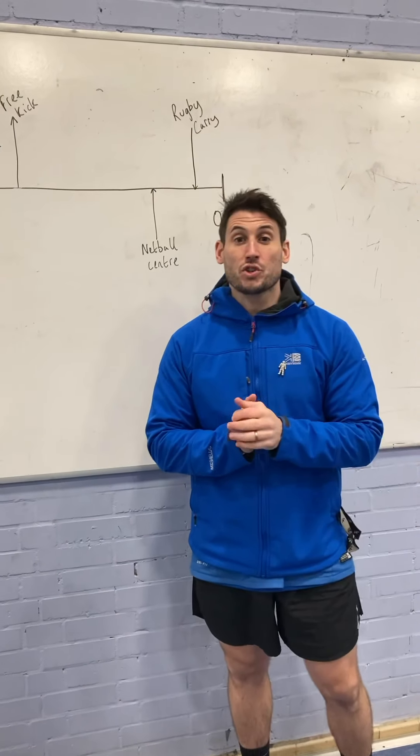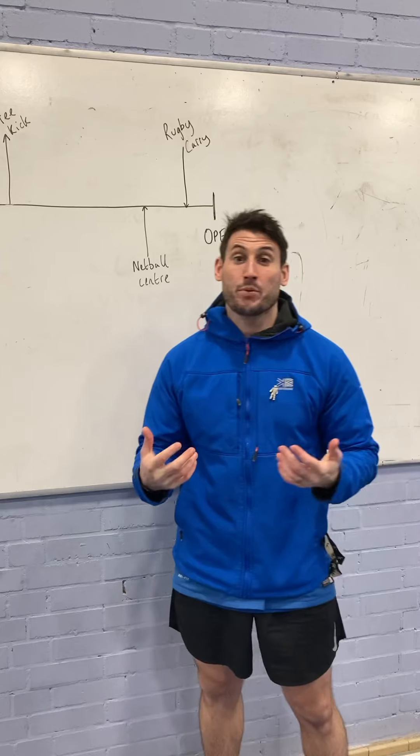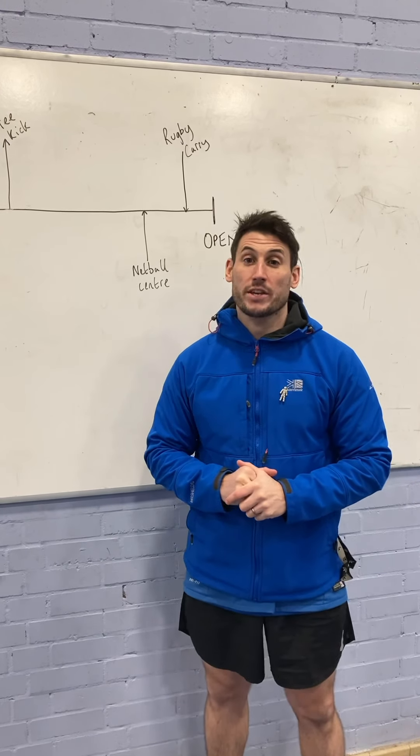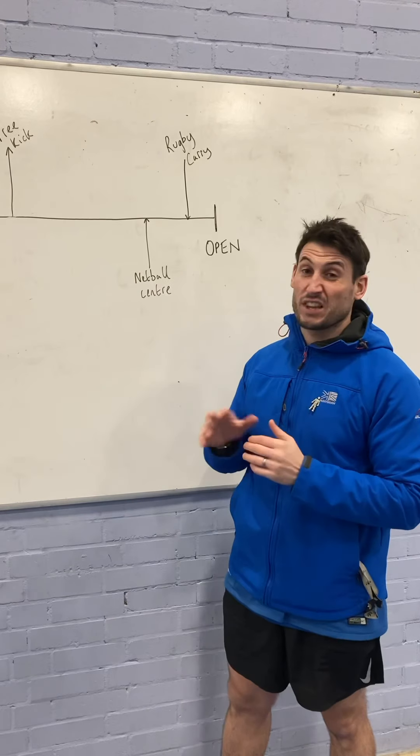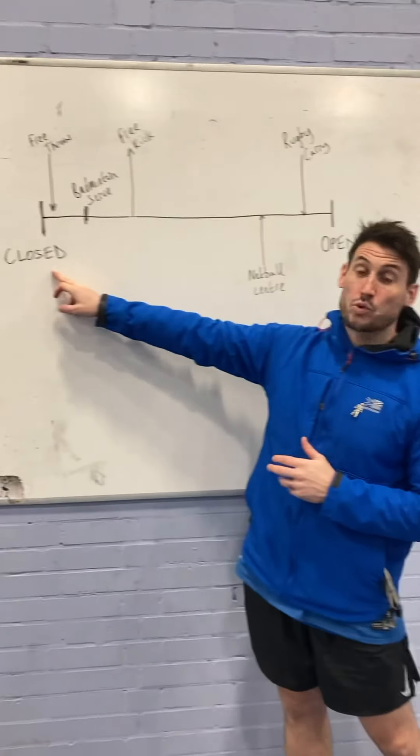Another example would be a rugby player when they catch the ball. If they're one-on-one with an opponent, this situation is not always the same. They might sidestep and go one way, throw a dummy, or just charge over them. The environment is constantly changing, and the performer has got to constantly adapt. We've just looked at some examples of open skills and placed them onto our continuum. So just a little recap: we have closed skills at one end.